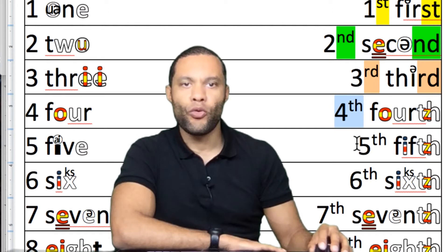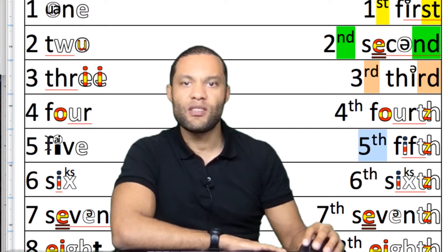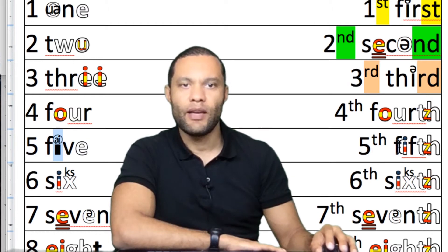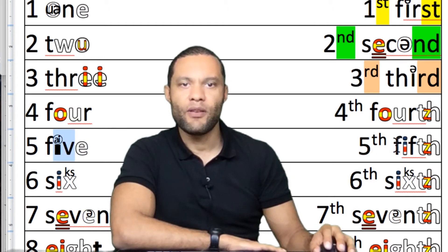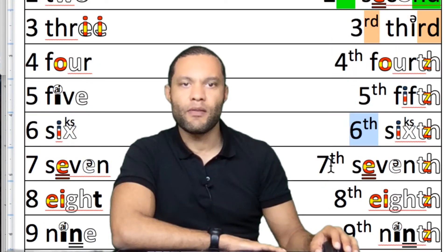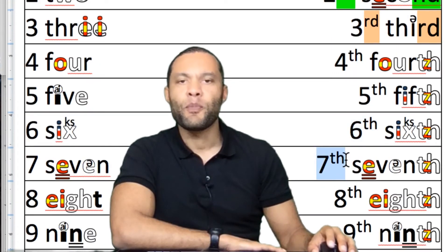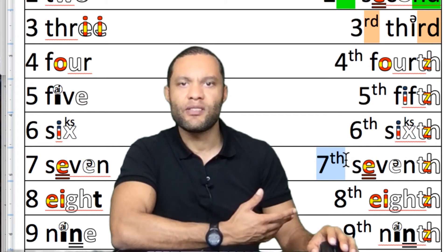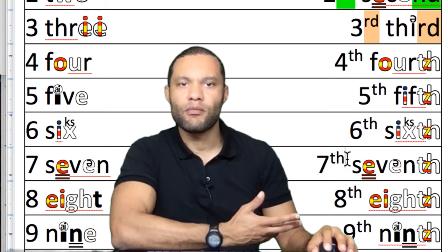Then we've got 'fourth', 'fifth'. Notice there's a difference between 'five' — where this is an 'I' sound — and 'fifth': five, fifth. Then 'sixth', 'seventh'. If you've got problems pronouncing the 'th' sound, make it an 'f'.